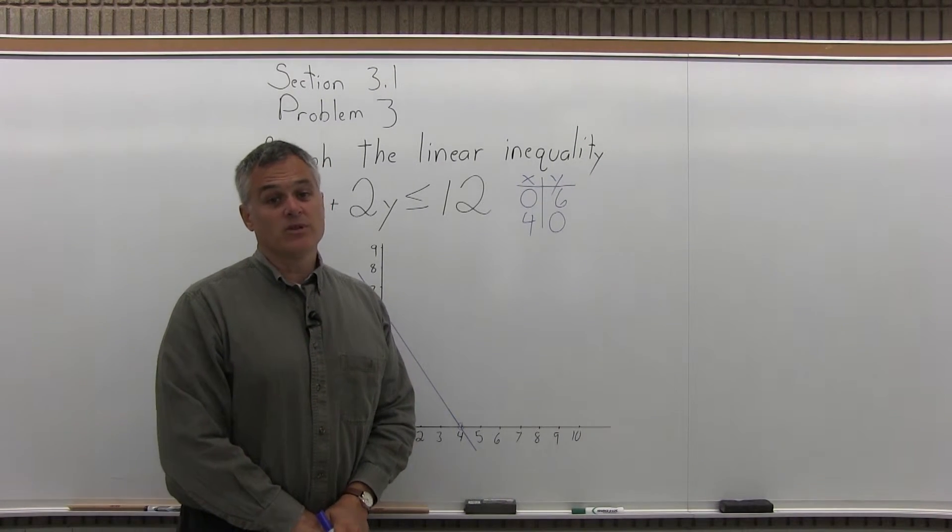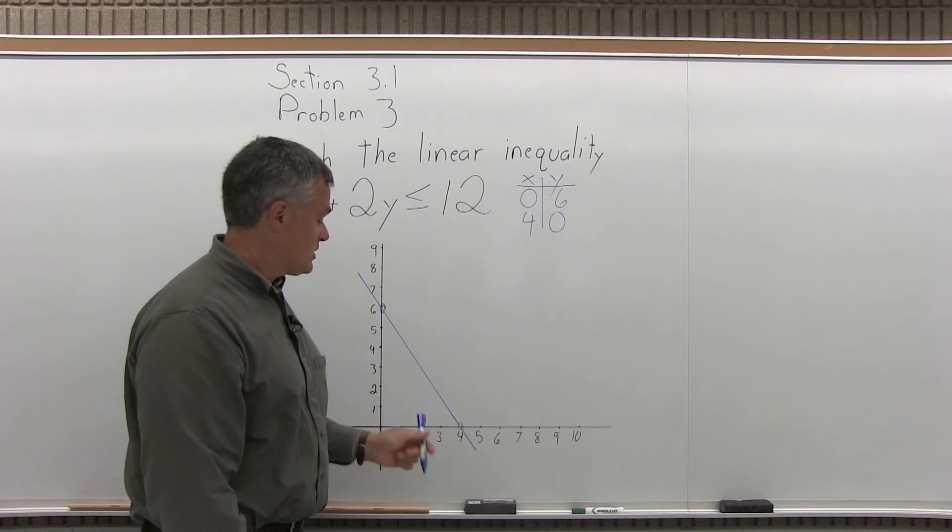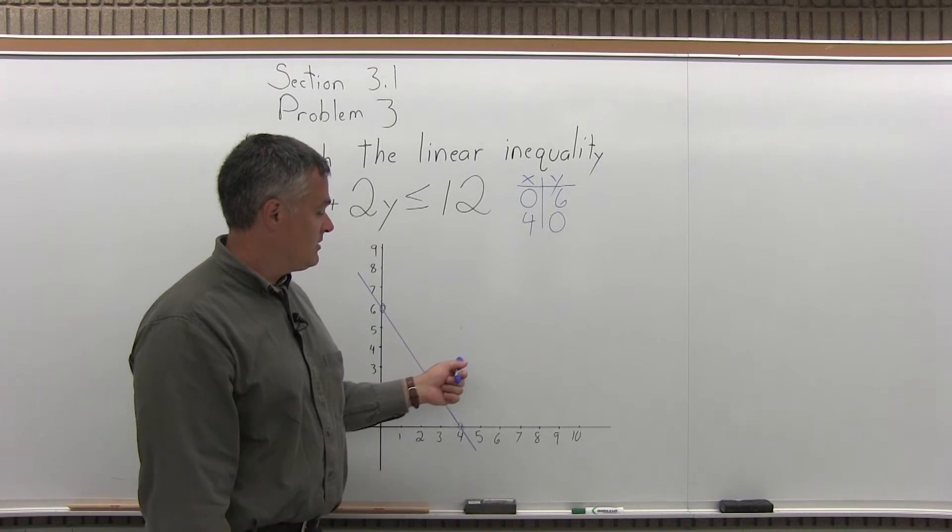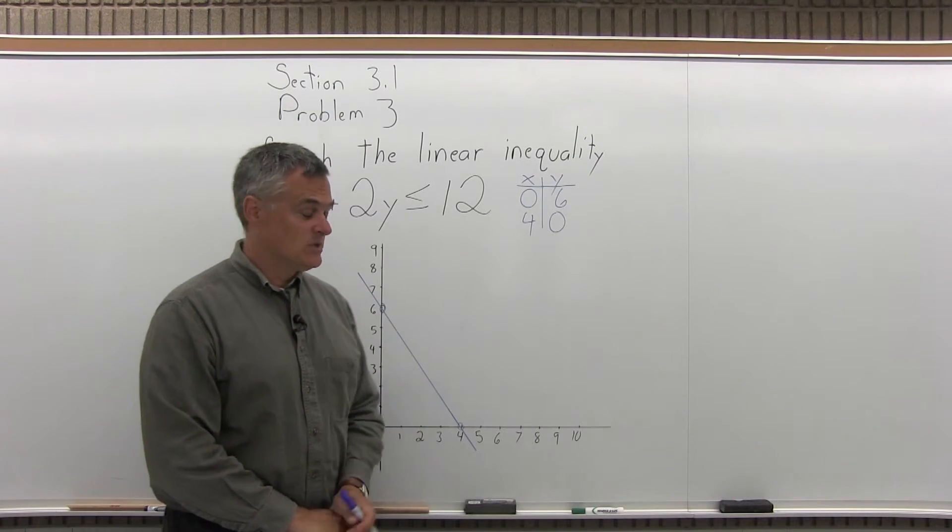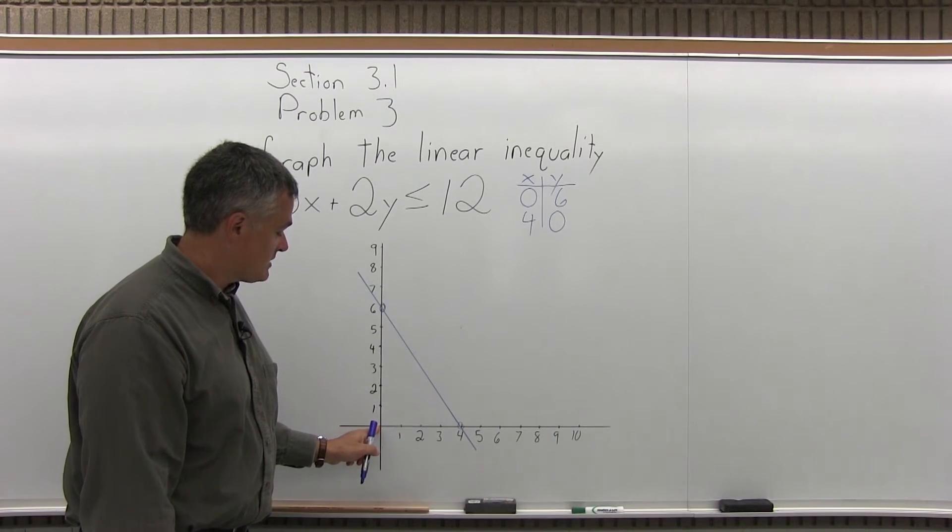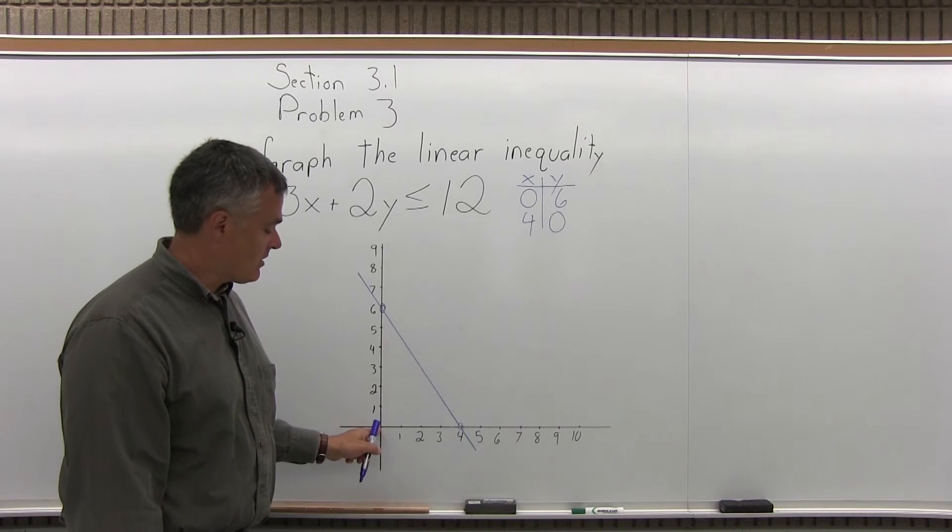Step 4, determine which half of the graph I should shade. Should I shade below that solid line or above it? So to do that, what you want to do is choose a test point that's not on the line. Use 0, 0 if you can. That's my favorite test point. 0, 0 is over here. It's not on the line, so I can use it.